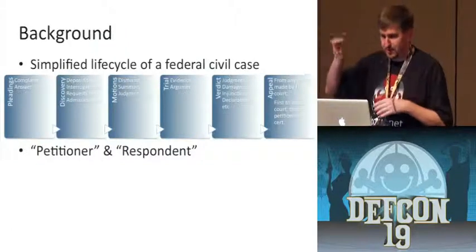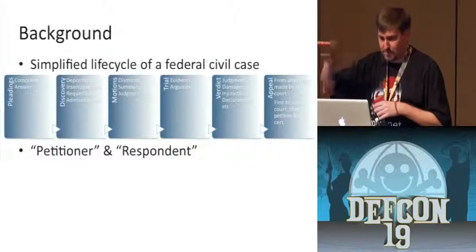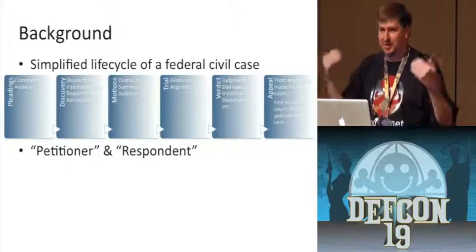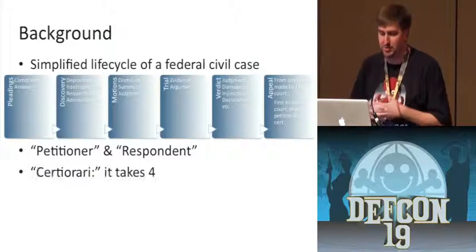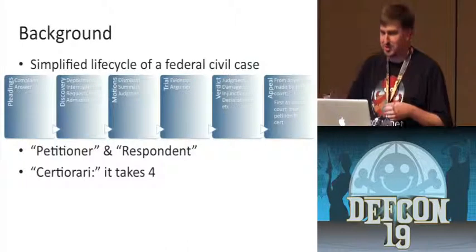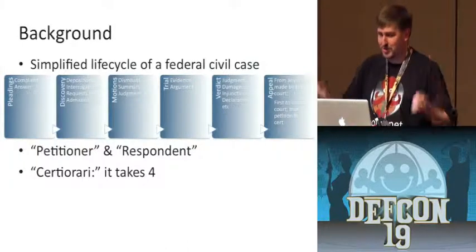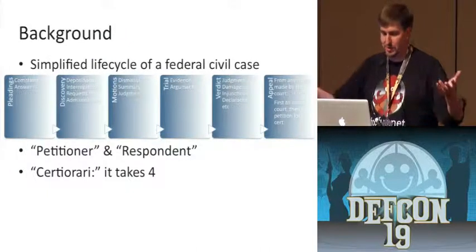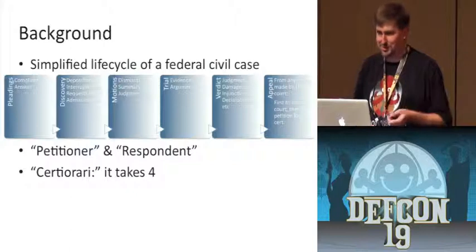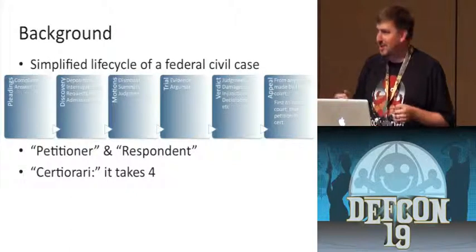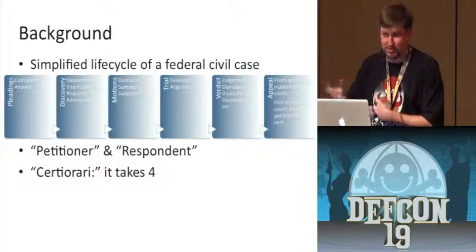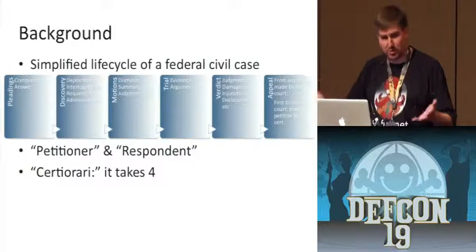In a federal court, you hear your trial at the district court level, then appeal to the circuit court level. Whoever doesn't like what the circuit court did can try to get it into the Supreme Court — this is called a petition for certiorari. Certiorari is the writ the Supreme Court issues saying they're taking the case, and it takes four justices to agree. The Supreme Court gets a gazillion petitions a year and selects about 80 or so to hear, voting on cases with the rule of four.